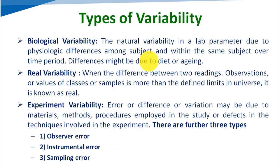Types of variability — that means what is the variability of the data. Generally, in physics or chemistry there is not much variability of data. When we are considering medicine-related data or biological data, there is always a chance of variability. So we will consider the types of variability.